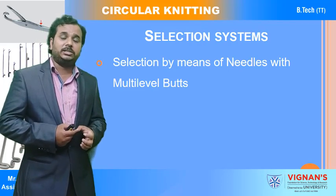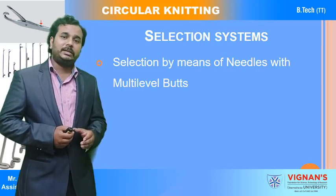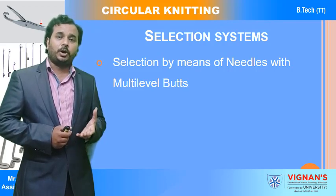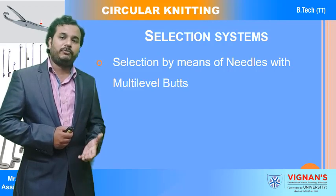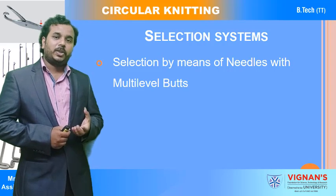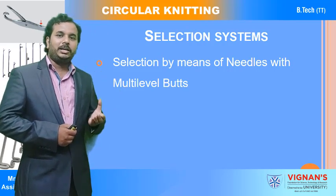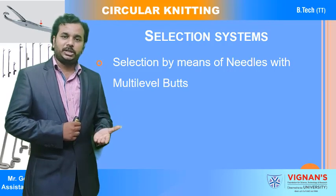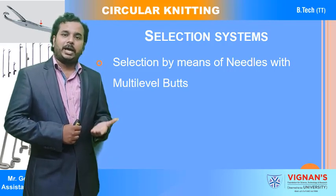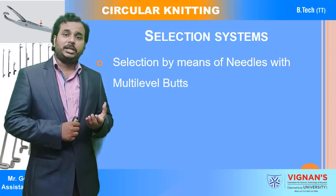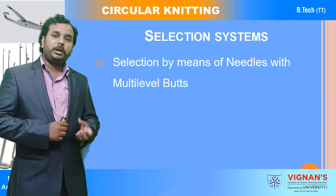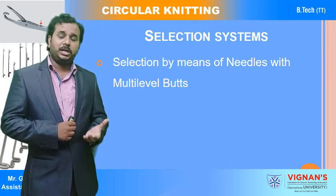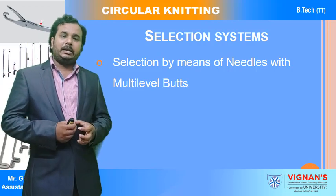Selection of the needles is very important to get the fabric structure — which needle has to be raised up, what is the position of rising up or lowering down, and when loop formation is happening. To form basic stitches — the knit stitch, tuck stitch, and miss stitch — you vary the movement of the needle: the clearing positions. Depending upon the movement of rising and lowering down, you get different kinds of stitches in the knitted fabric.